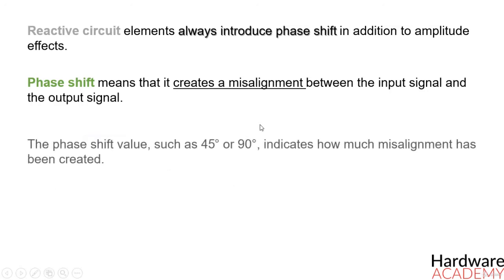The phase shift value, such as 45 or 90 degrees, indicates how much misalignment has been created.